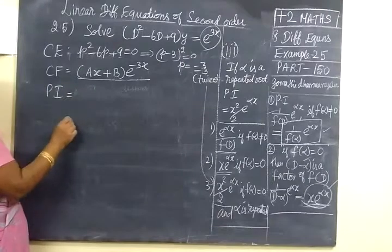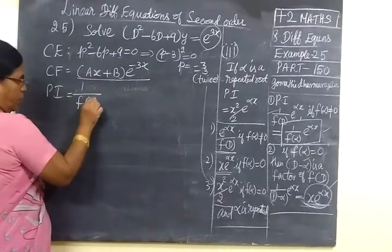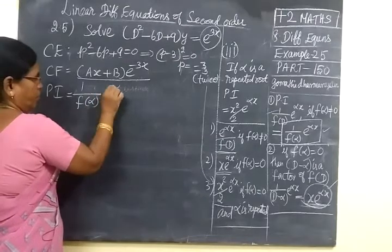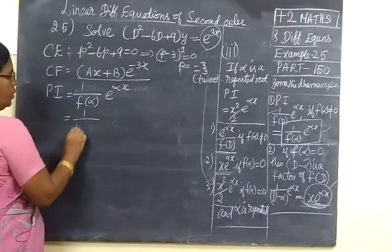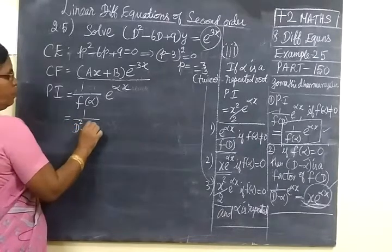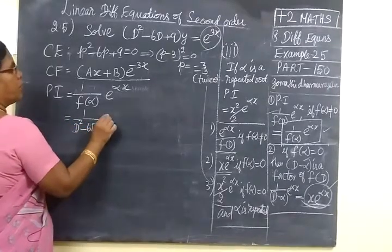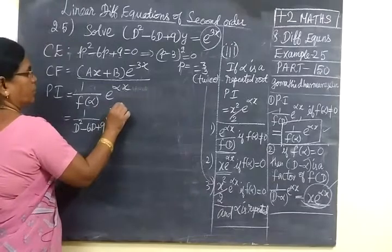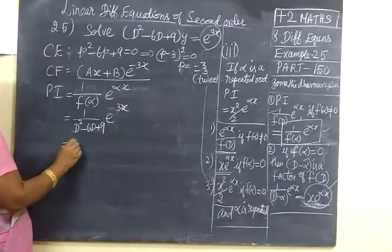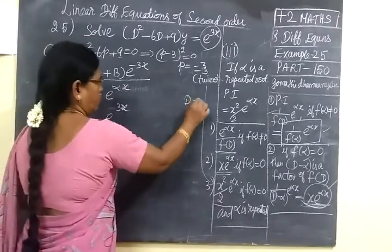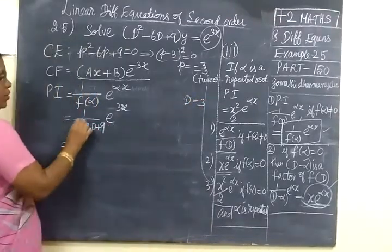Next we are writing particular integral from the 1 by f(d) e^(αx). So equal to 1 / (d² - 6d + 9). Then e^(3x). Then for d you substitute 3. So for d you substitute 3. So 3² = 9.